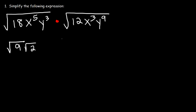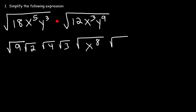And the square root of 12 is the square root of 4 times the square root of 3. x to the 5th times x cubed — we need to add the exponents, 5 plus 3 is 8. And 3 plus 9 is 12.